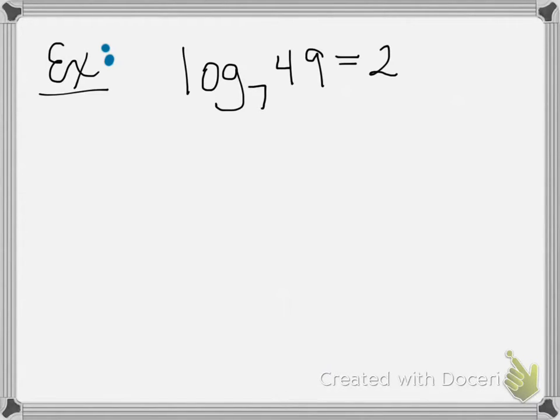If I have, for example, log base 7 of 49 equals 2, since the logarithm is the inverse of the exponential, I can actually rewrite it. So first I'm going to rewrite this as an exponential function. And to do that, that would be 7 to the second power equals 49.